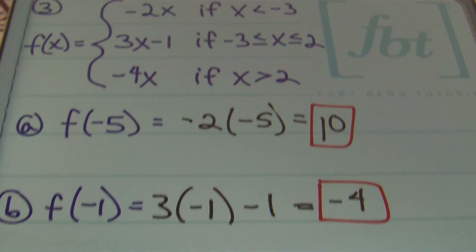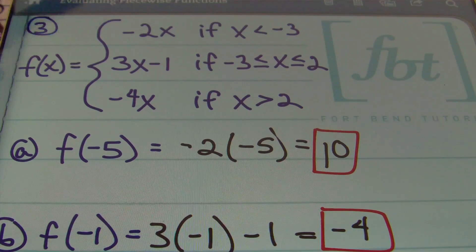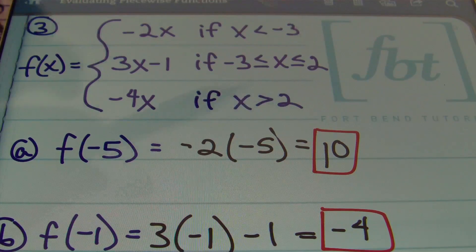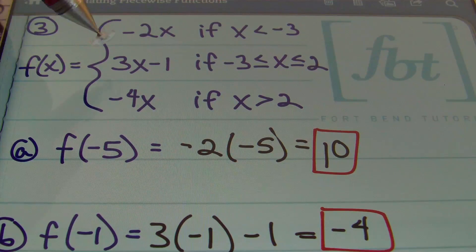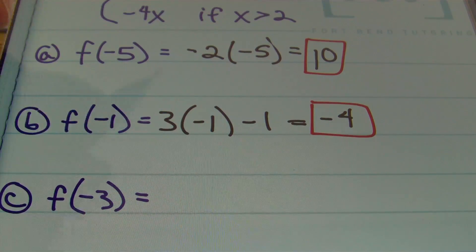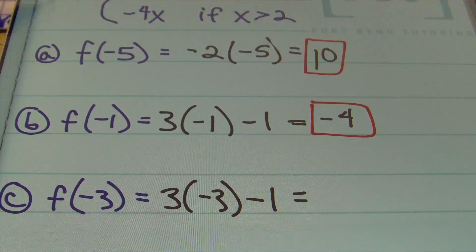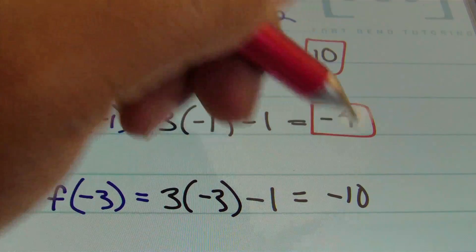For part c, x equals negative three. When x equals negative three, we use the second part of the function because the condition says x must be greater than or equal to negative three and less than or equal to two. Plugging in: three times negative three minus one. Three times negative three is negative nine, and negative nine minus one is negative ten.